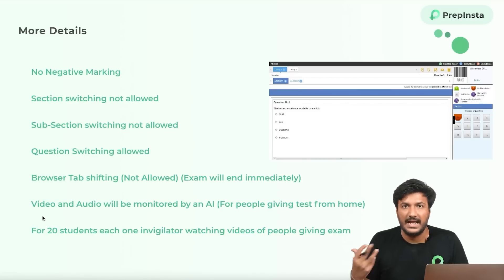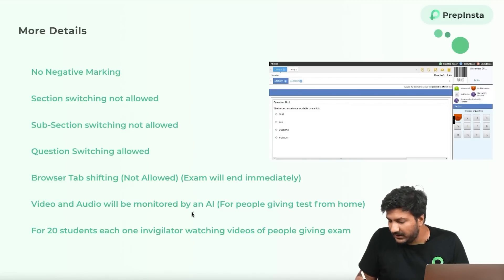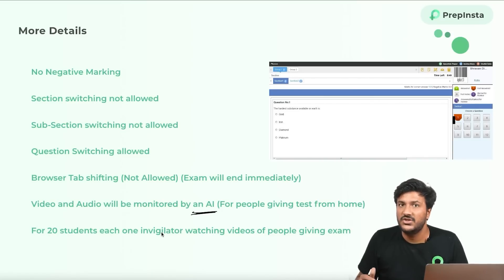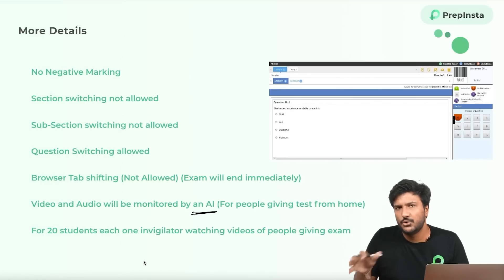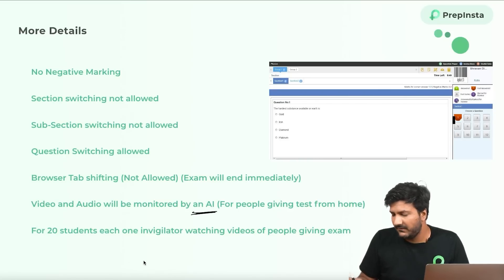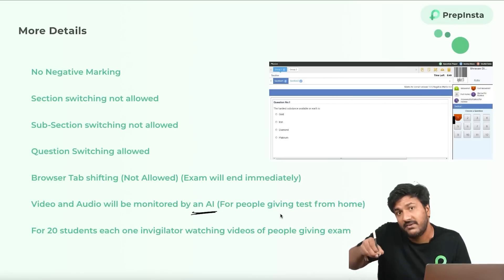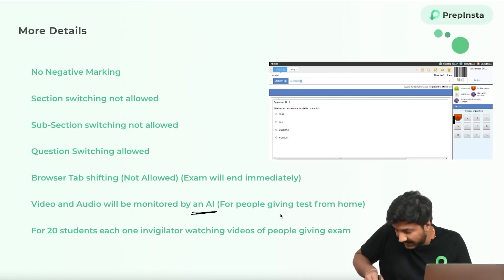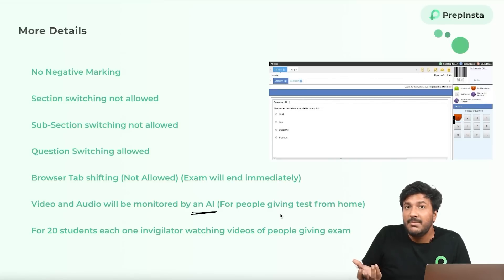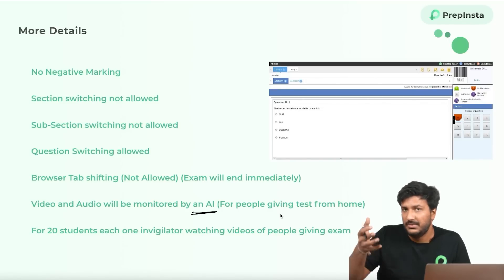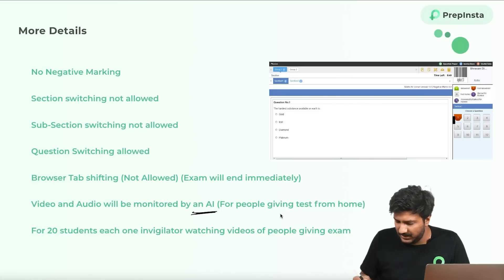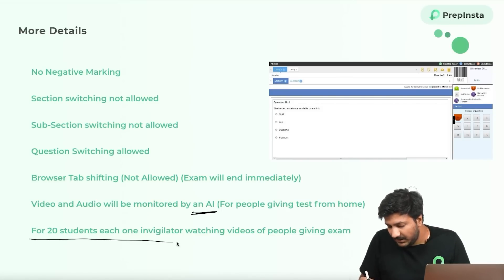The AI is good enough to understand if you are cheating — for example, if you're not looking at the screen and may be looking at your phone. I'll show you the setup that TCS has recommended. Sometimes you'll be solving something by looking down and writing on paper, so they may be confused about whether you're cheating. The recommended setup will make your actions clear to the proctoring system.